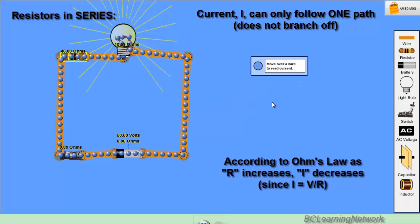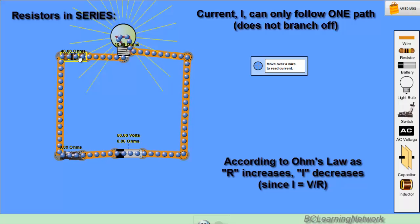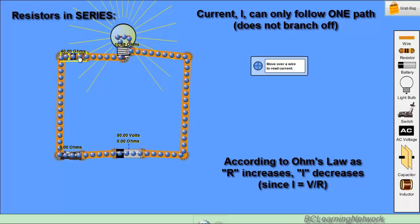Now from Ohm's law we know that as the resistance increases, like if I increase this resistor, the current should decrease. We have an inverse relationship. As the resistance gets bigger, the current gets smaller. So let's see what happens when we add one in series.